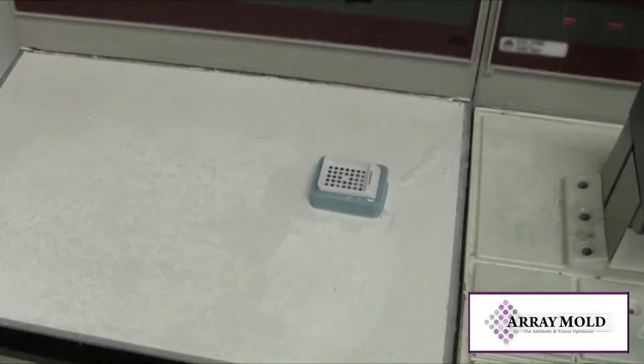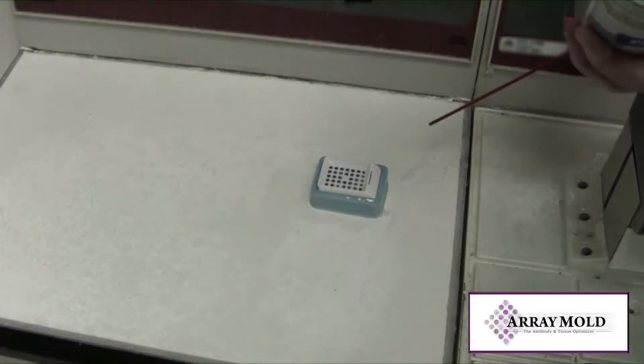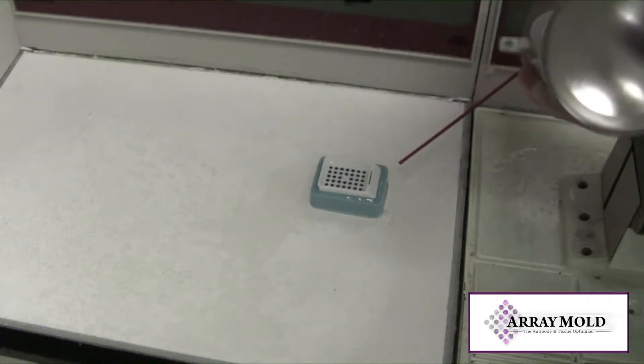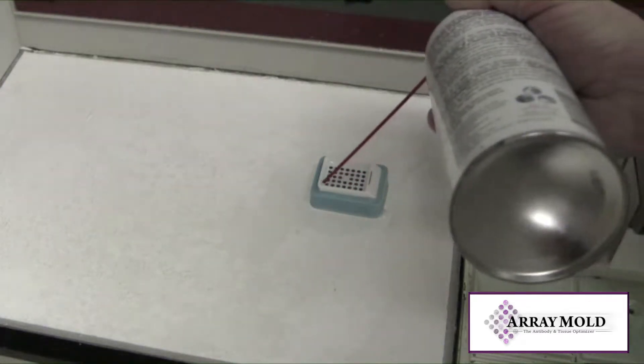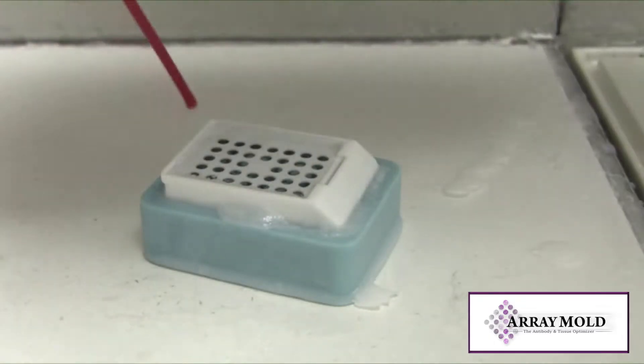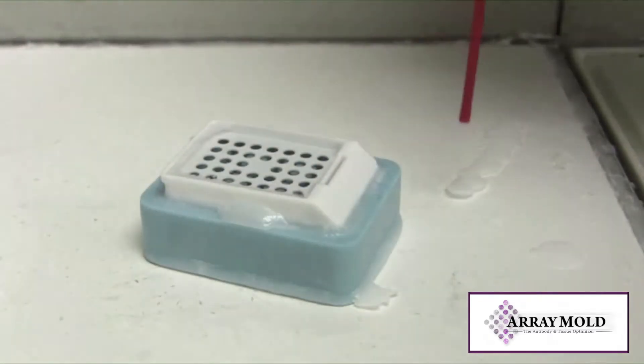I'm using freeze spray here around the cassette. This creates a paraffin seal so that the paraffin doesn't drip out, because you need to fill the cassette to the top and this will give you a good solid block for making your tissue microarray.